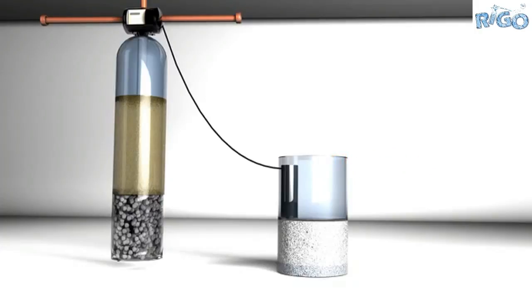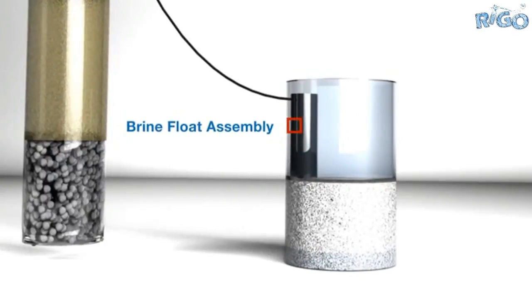Inside that brine tank, you'll find the brine float assembly. Plumbers will notice this part resembles a large ball cock assembly with one difference. It has an air inductive valve at the bottom, which allows water to come up.